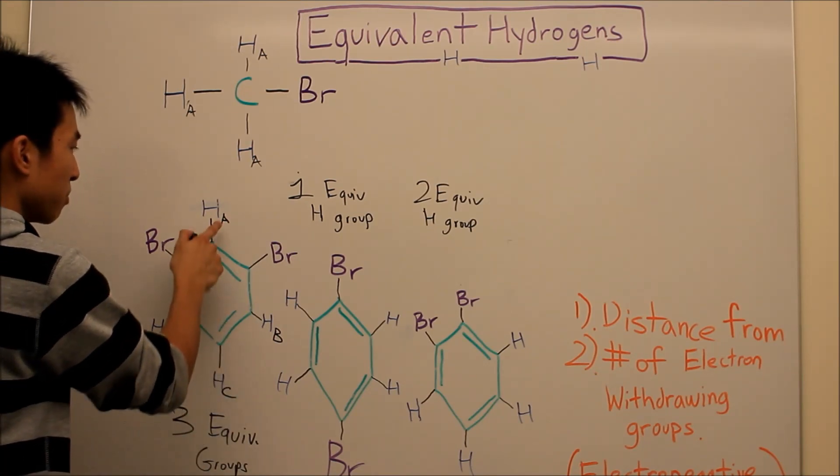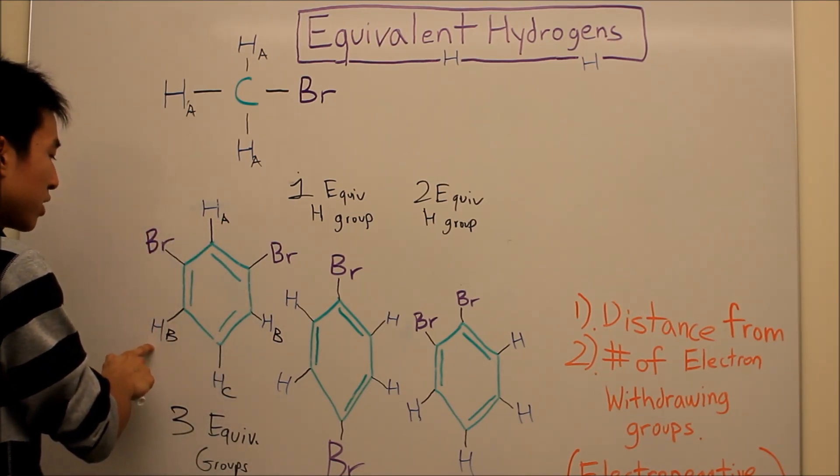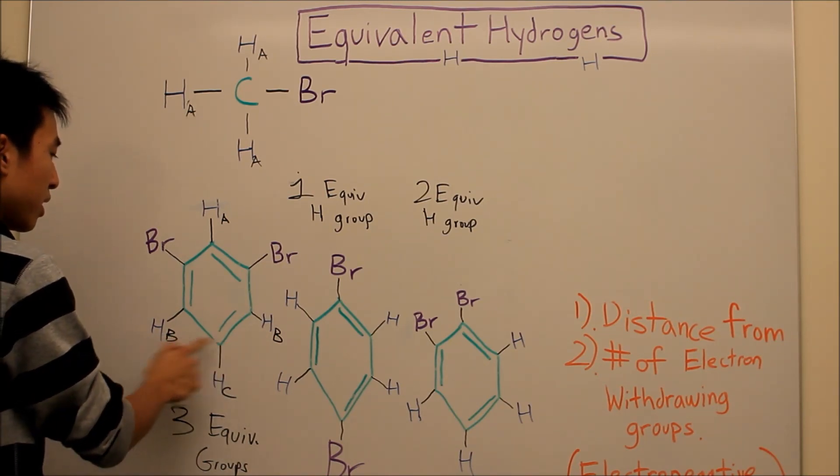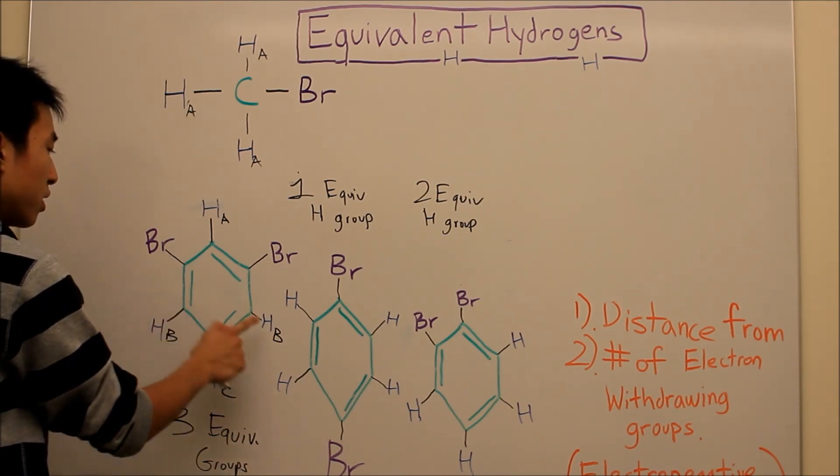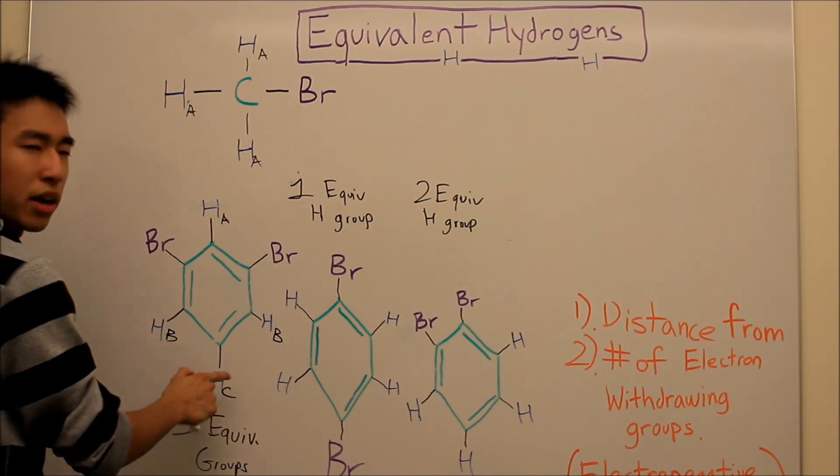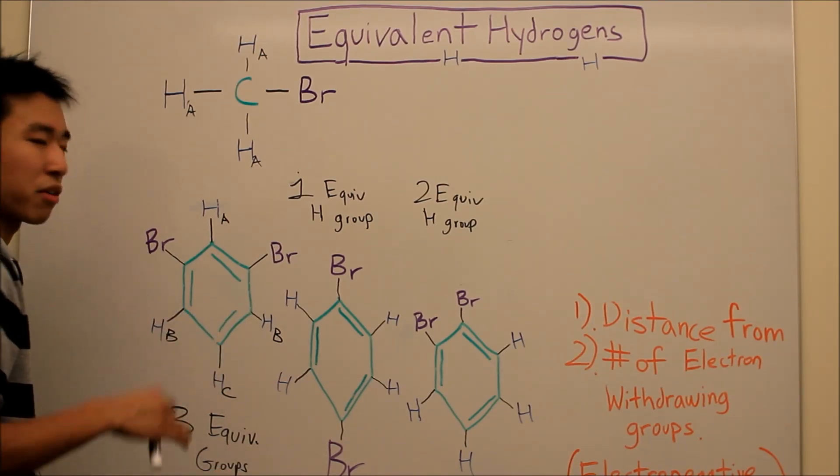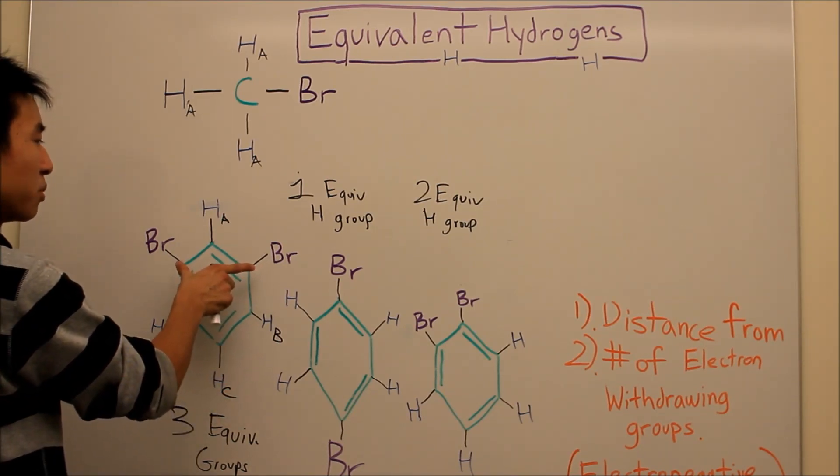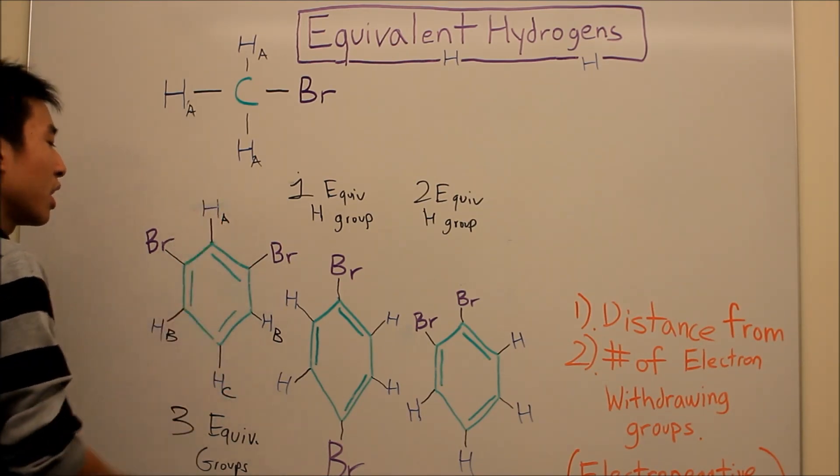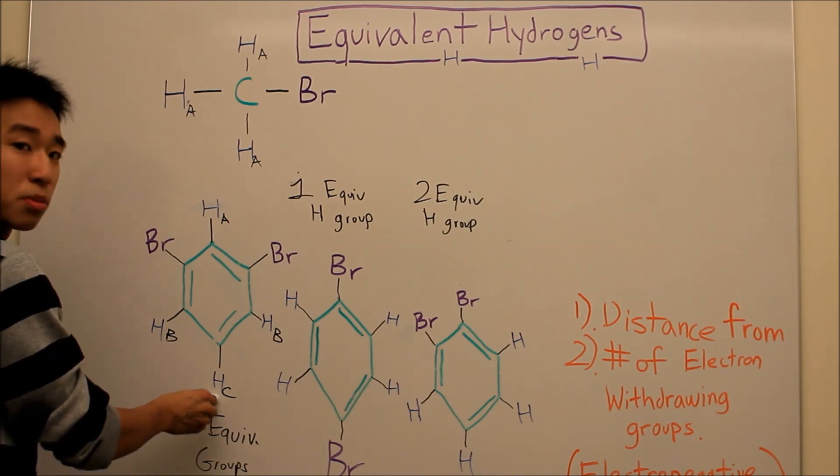And then this guy here, this hydrogen B, feels the same thing as this guy. They both have a bromine over here, a bromine in here, and a hydrogen behind them. And this guy here, Hc, he kind of has like the back row seats. He's just sitting there watching the two bromines steal the electrons from the hydrogen, so he's going to be the third group.